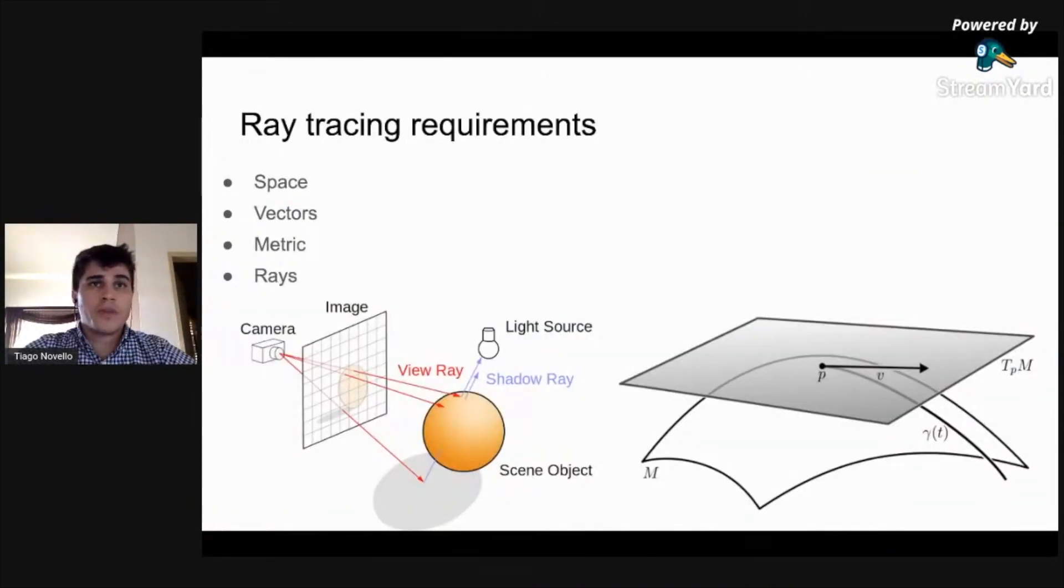The paper deals with ray tracing in non-Euclidean geometries. Thus, at least three properties are required. First, being locally similar to Euclidean space, that is a manifold. This allows us to model the viewer and the scene inside the space.